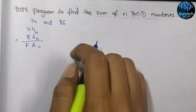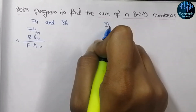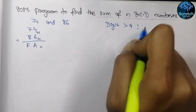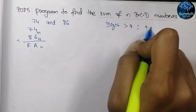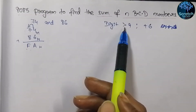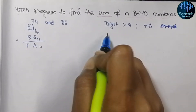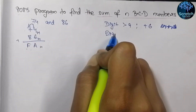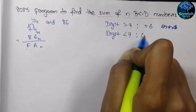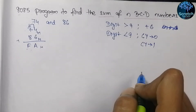But here we want the result in BCD format. So what is the rule of conversion into BCD format? If the digit is greater than 9, then we have to add 6 to it. So if the lower digit of a number is greater than 9, we add 6 to that digit. And if the digit is less than or equal to 9, we have two cases: first when the carry is 0, and second when the carry is 1.